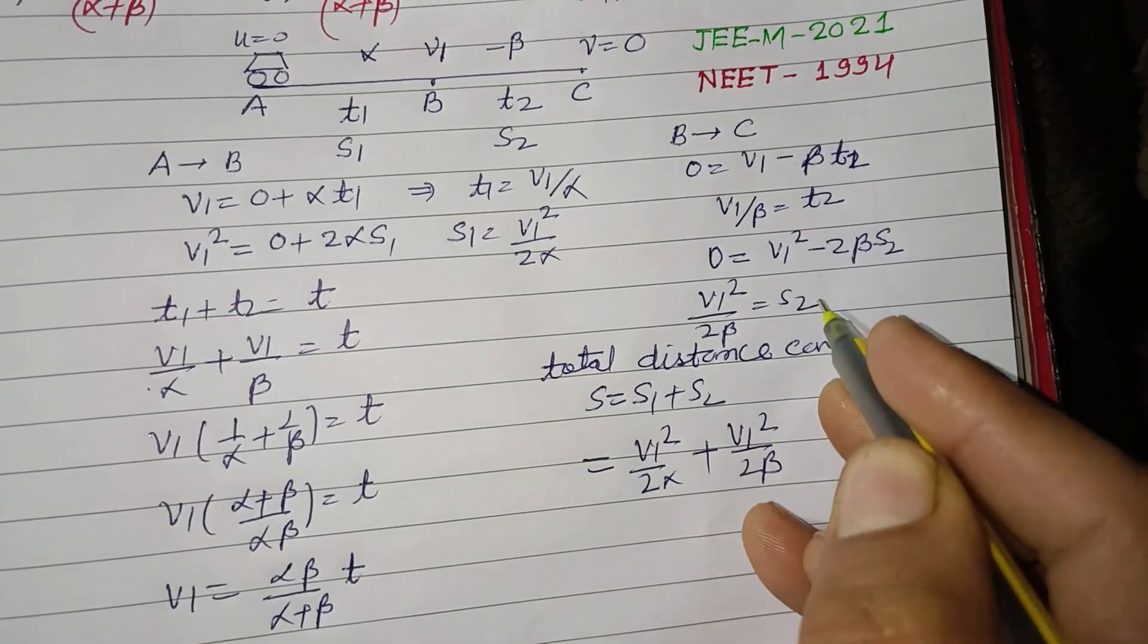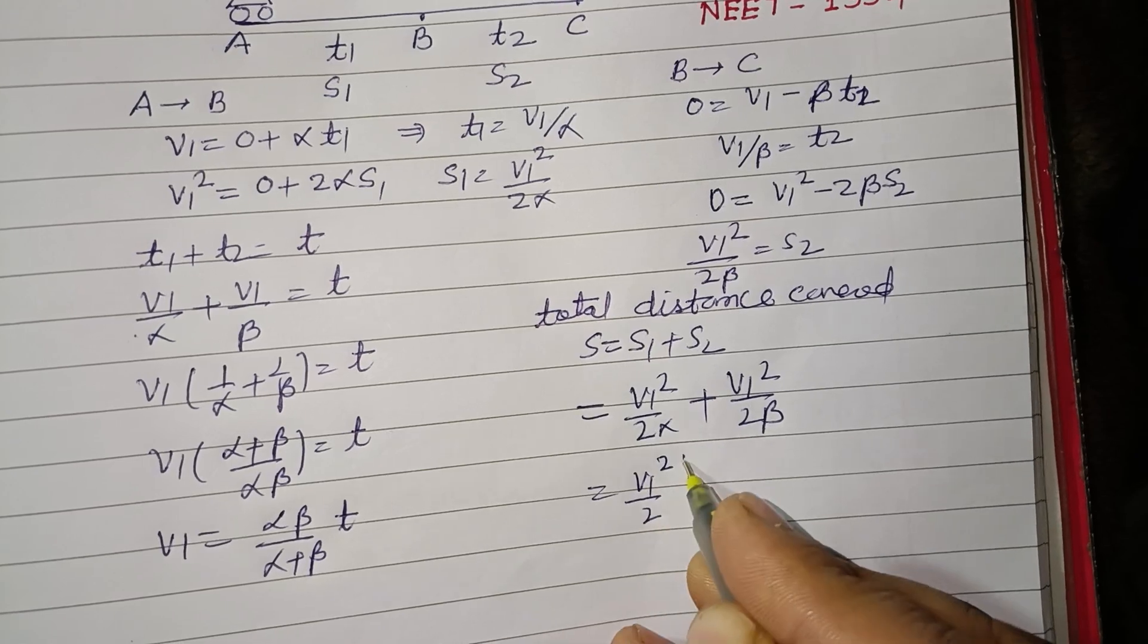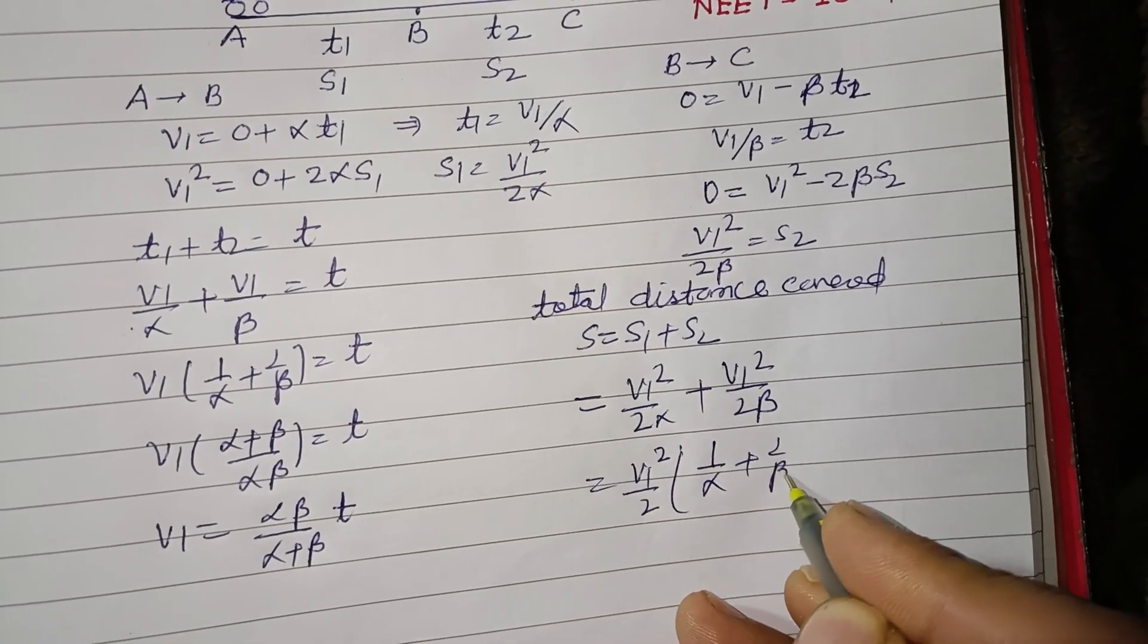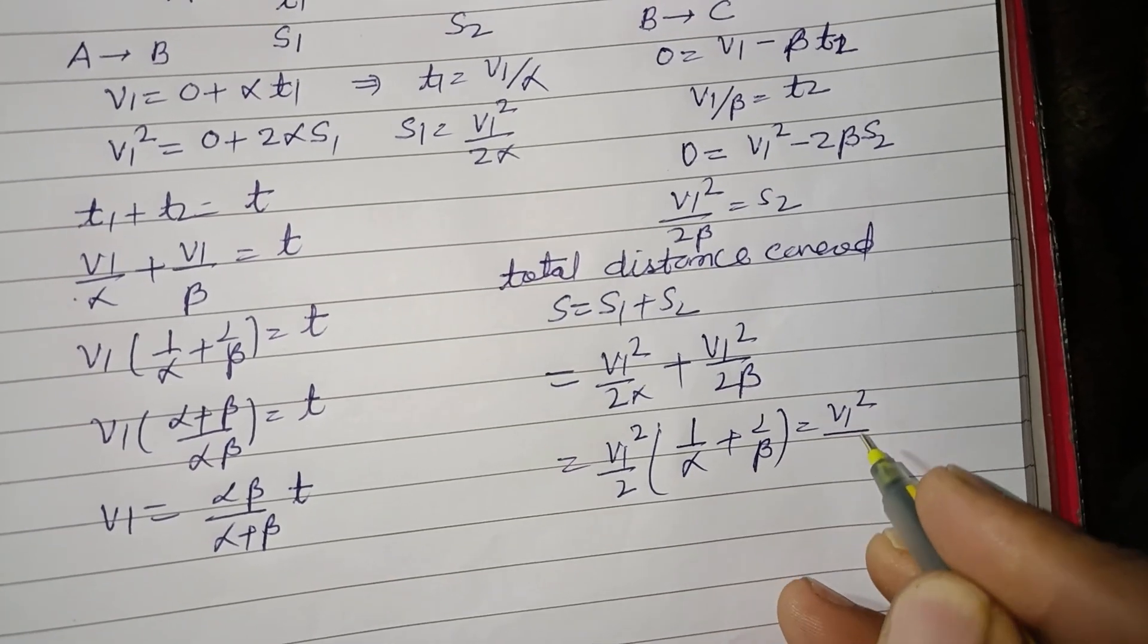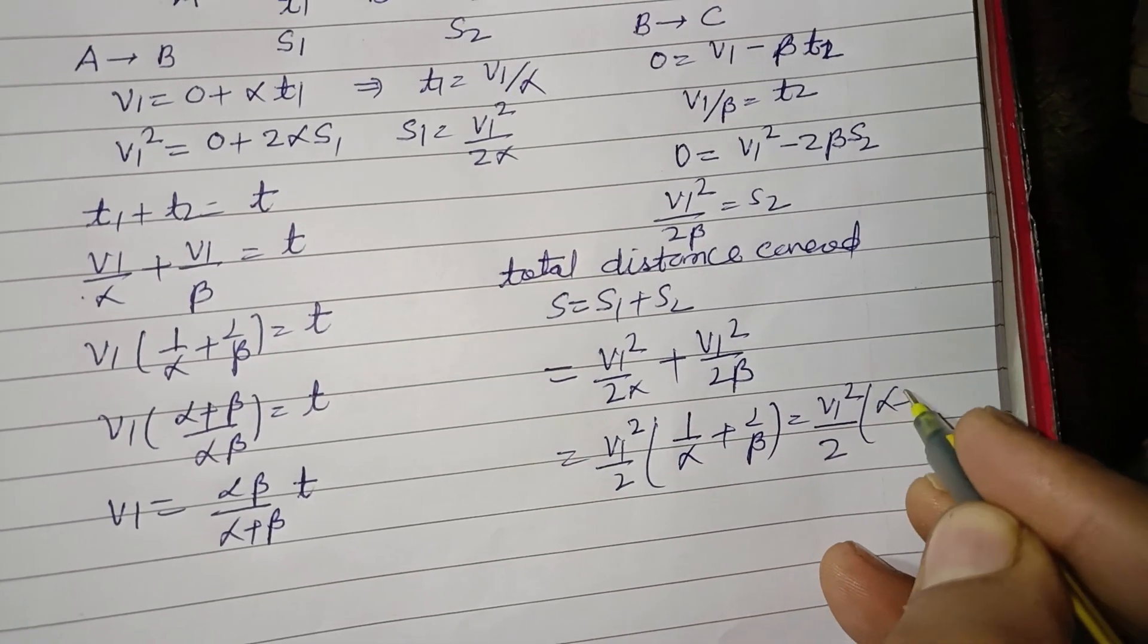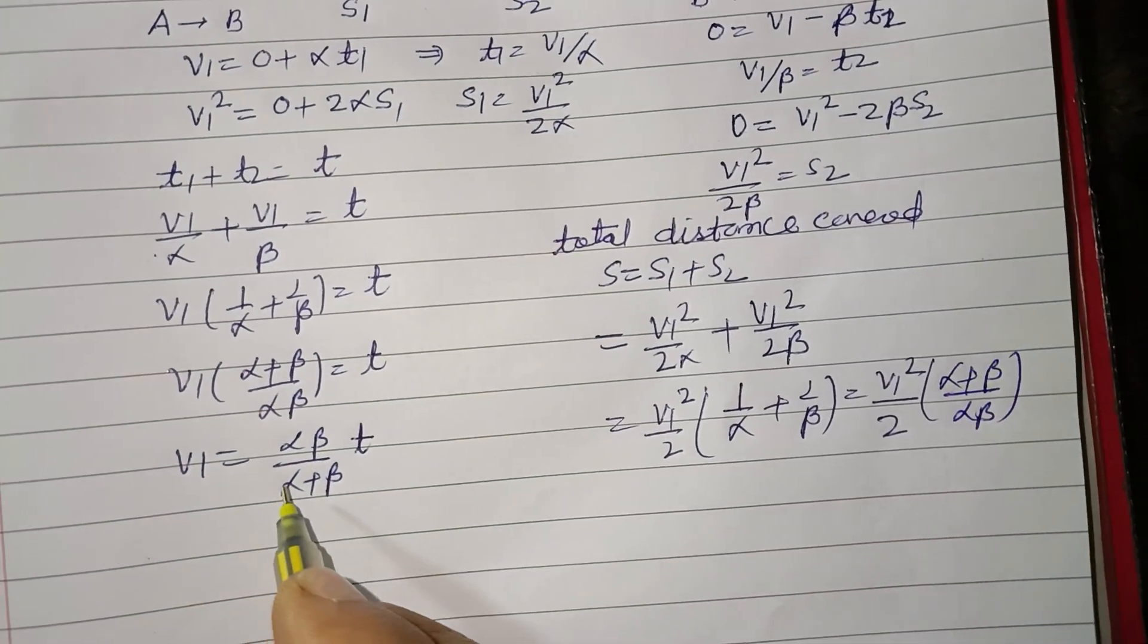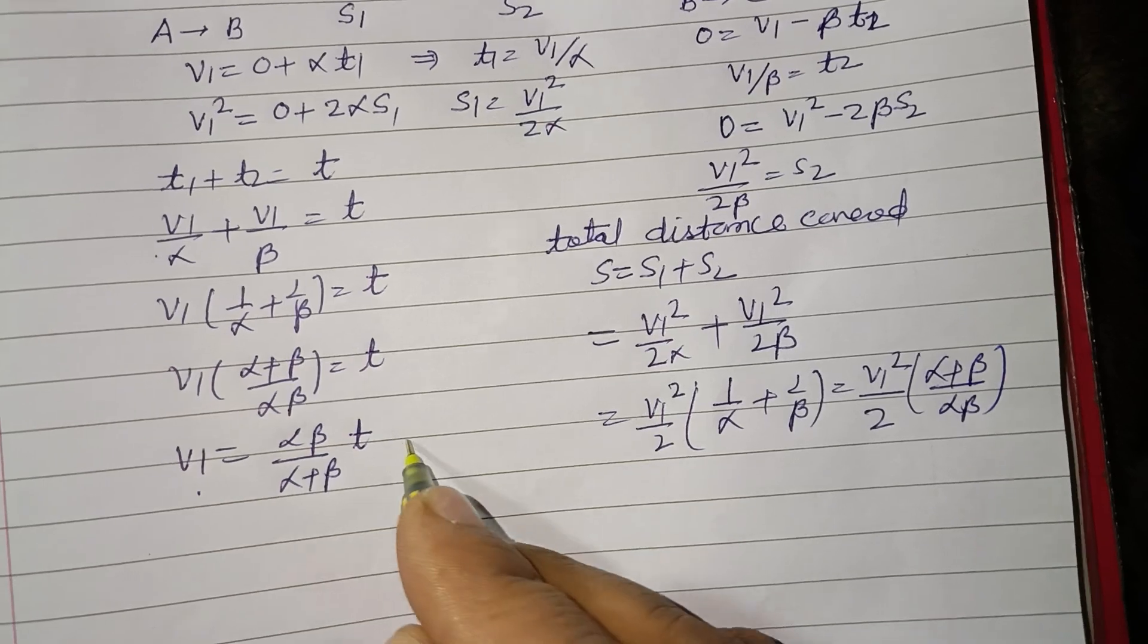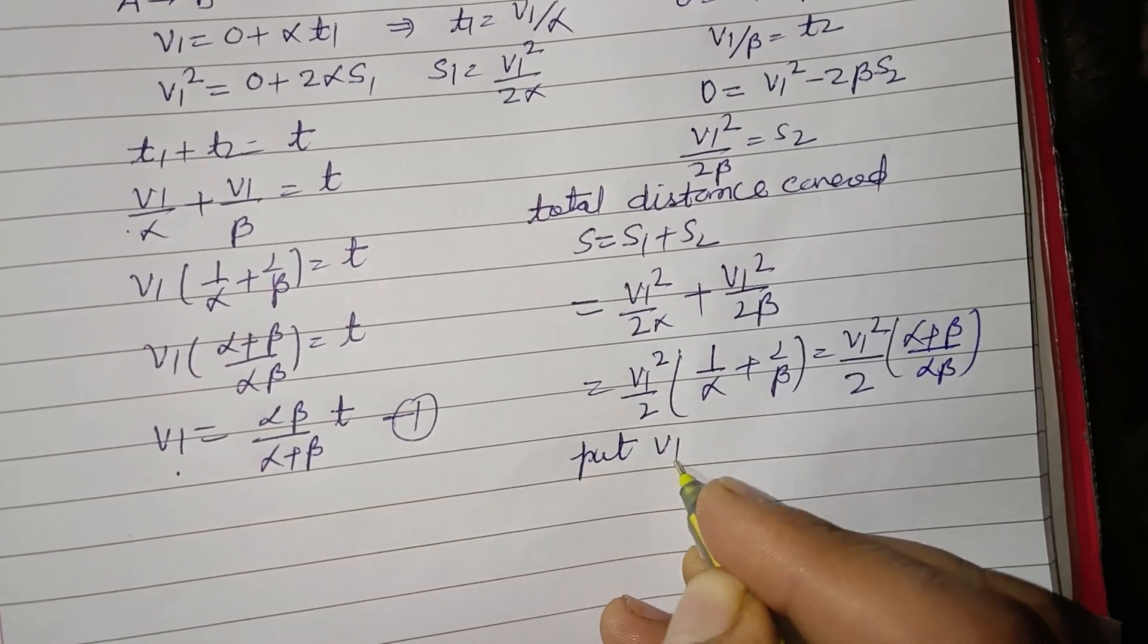So v₁²/2 is common: 1/α + 1/β, which is v₁²/2 × (α + β)/(αβ). From this, we put v₁ from the first equation.